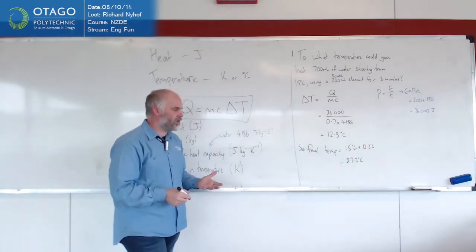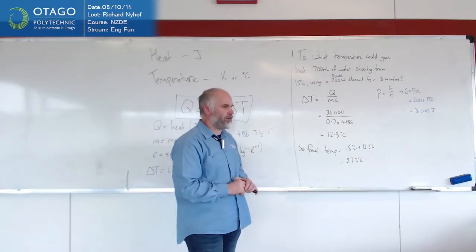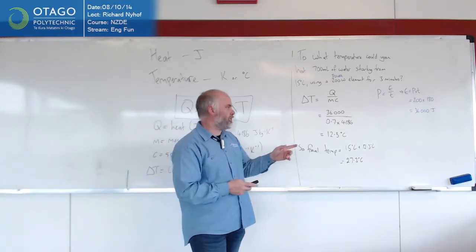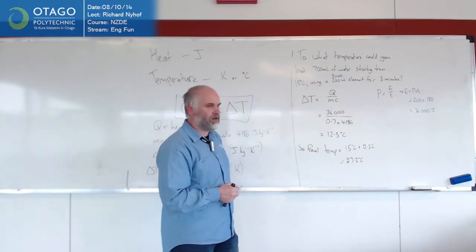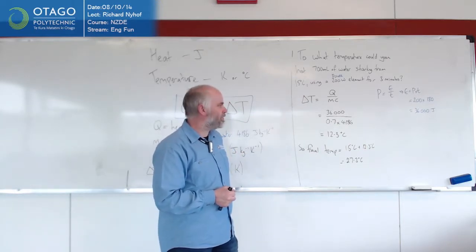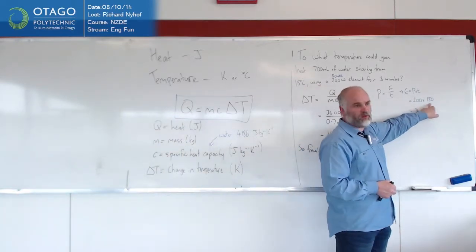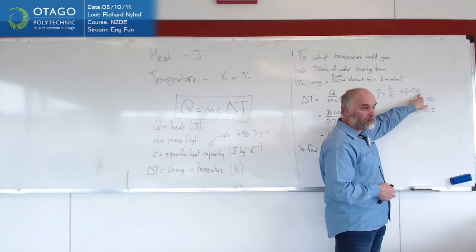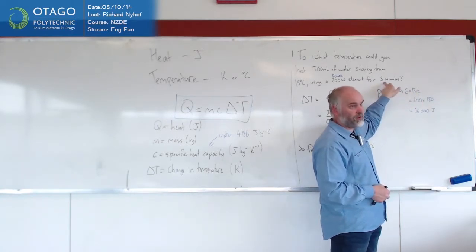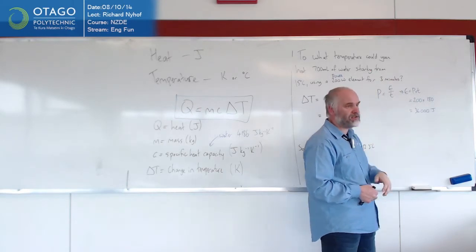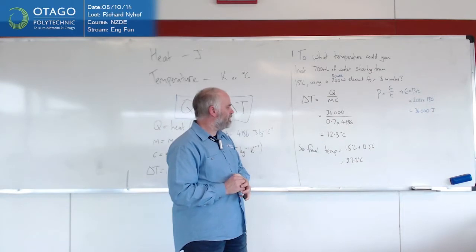So it hasn't increased it an awful lot. So a 200-watt element running for three minutes is only going to increase your, well, 700 mils is a few cups by a little bit. Levi? The 180? Well, the question was where did the 180 come from? Time? Three minutes in seconds. So three lots of 60 seconds, 180 seconds. So the time must be in seconds. Okay?